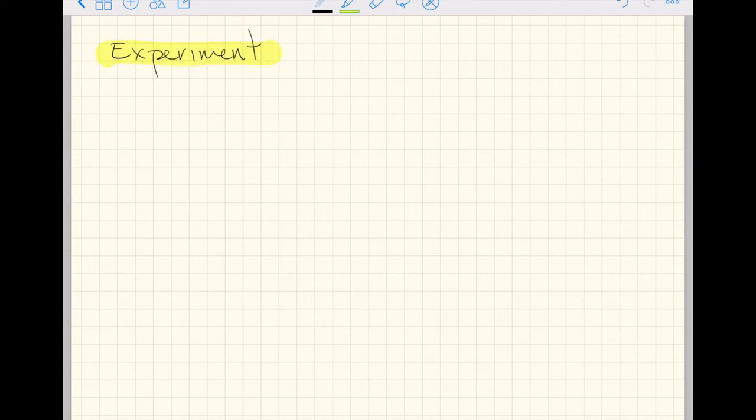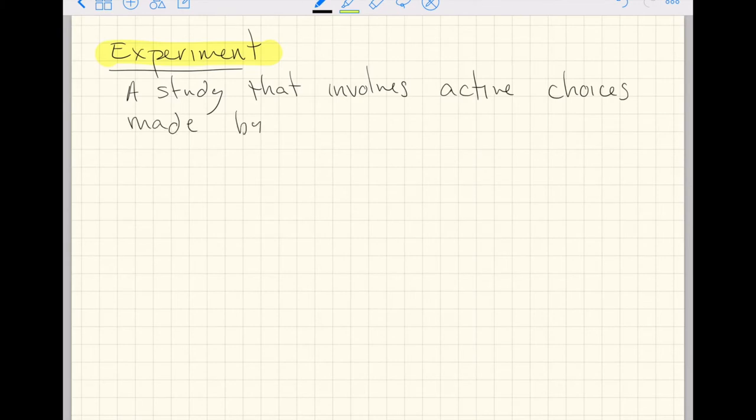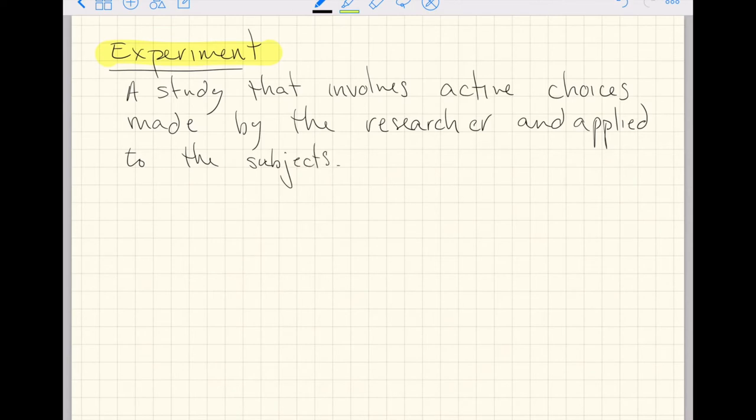An experiment is a key word for us. An experiment is a study that involves active choices made by the researcher and applied to the subjects. So really the key word in the definition of an experiment is when the researcher has an active role to play.